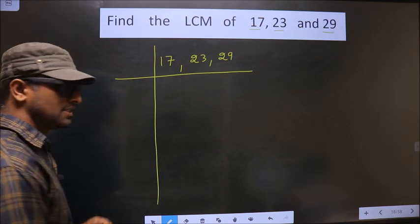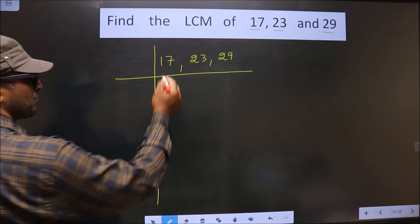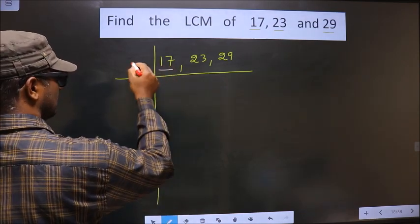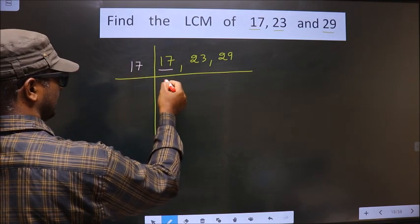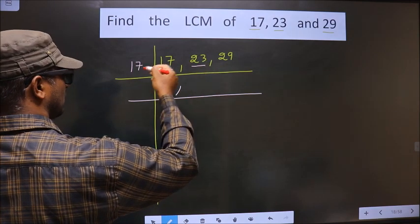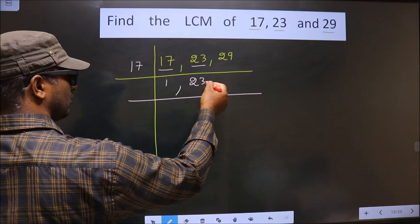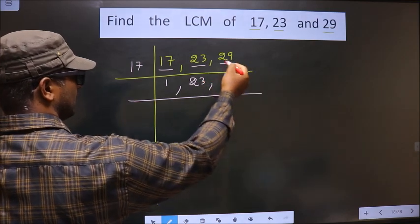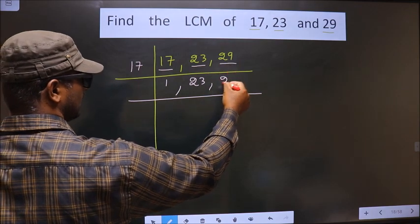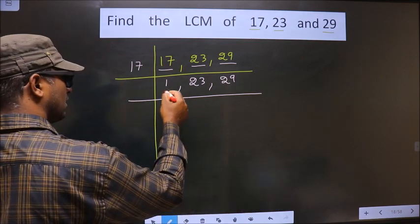This is your step one. Next, the first number is 17. 17 is a prime number, so we take 17 here and 17 once. 17, 23 is not divisible by 17, so 23 as it is, you write it down. Next number is 29. 29 also not divisible by 17, so you write 29 down. Now here we got one.